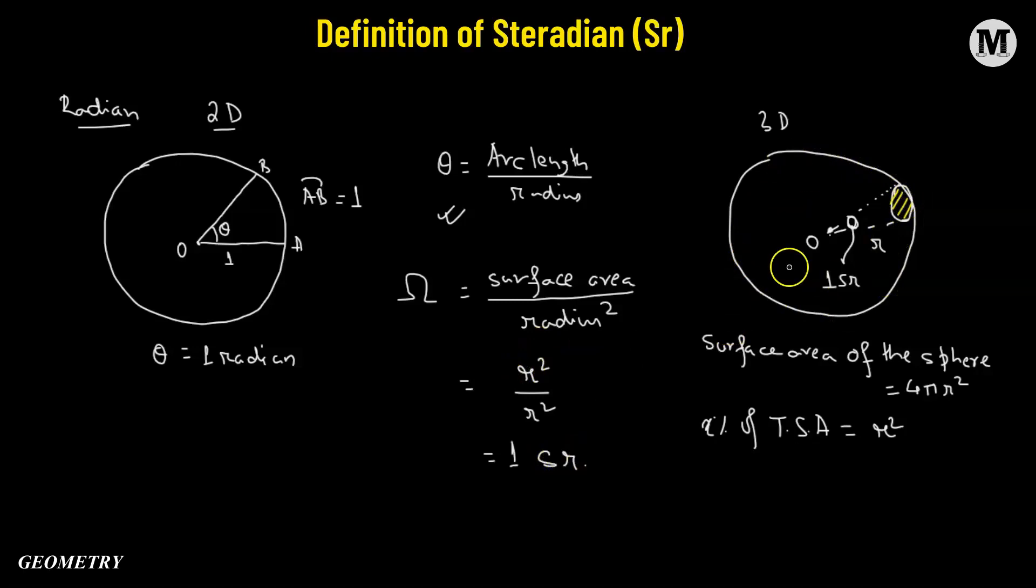Now, for the entire sphere, for the total sphere, what is the total surface area? That's given by 4πR² divided by radius squared. That means we get 4π. Now, that means for the entire sphere, the solid angle value is going to be 4π steradians.